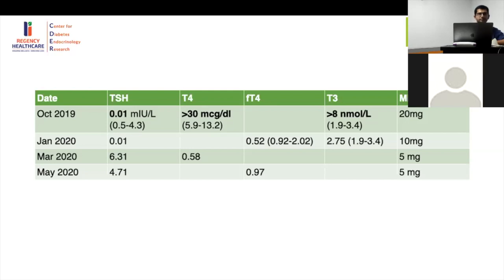You must give a beta blocker — it will control symptoms and also decrease conversion of T4 to T3. If the child were more severely ill, other agents to consider include glucocorticoids, steroids, and iodine — Lugol's iodine, SSKI, or even iodinated contrast — which are more for a thyroid storm situation. Iodine and steroids can help in very high levels as the adrenal metabolism may also be affected.